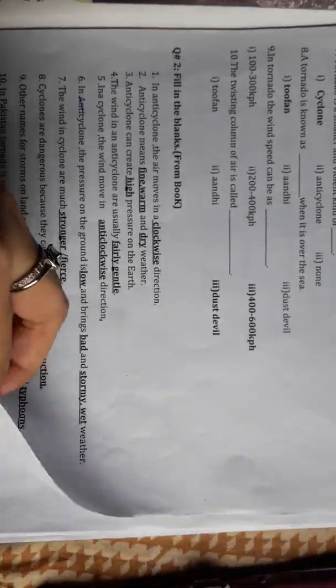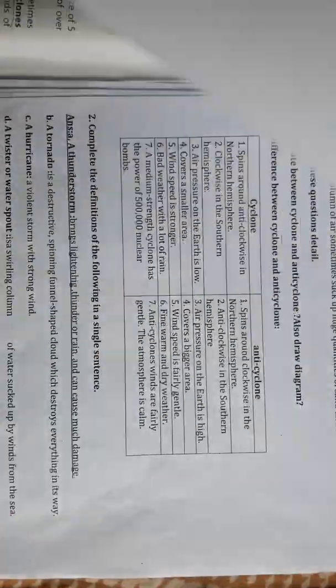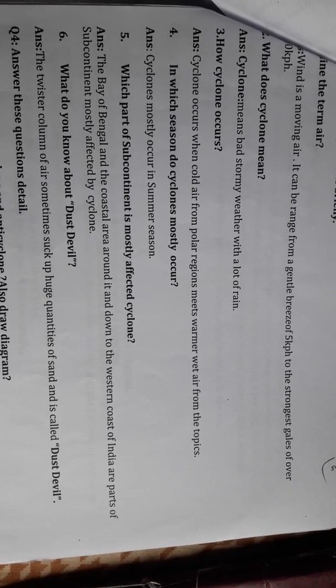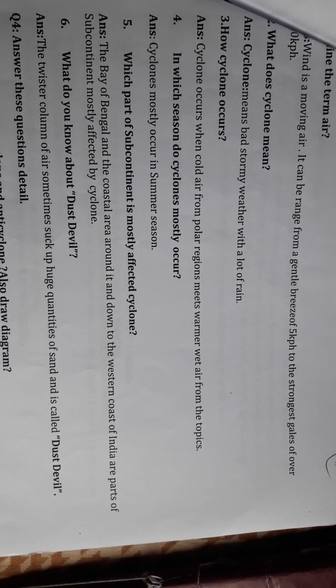Short question answers: Define the term wind. Wind is moving air. It can range from a gentle breeze of five kilometers per hour to the strongest gale of over 200 kilometers per hour.